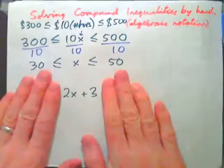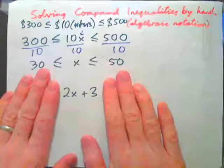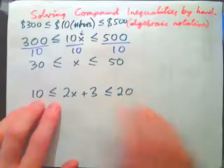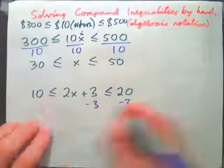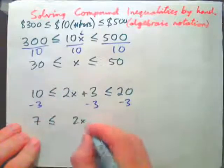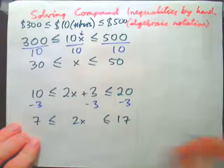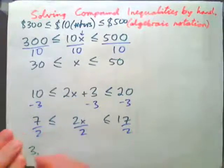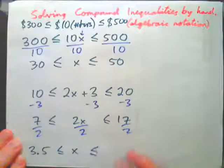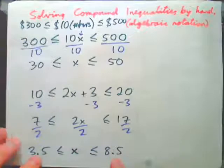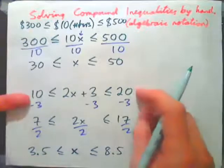A taxi fare is $2 per mile plus a $3 base fee. For how many miles is the taxi fare between $10 and $20? Subtract 3 from everywhere, and we have 7 ≤ 2x ≤ 17. Now divide by 2 to get x by itself, and you get 3.5 ≤ x ≤ 8.5. So if your miles are between 3.5 and 8.5, the cost of the fare will be between $10 and $20.